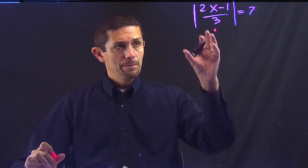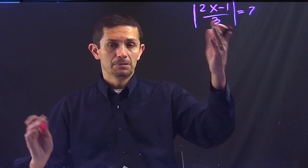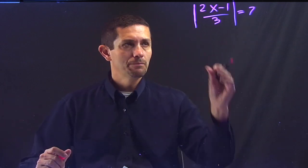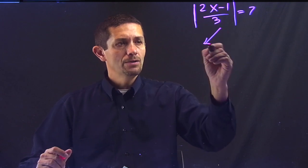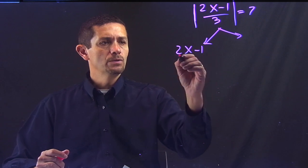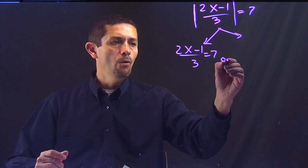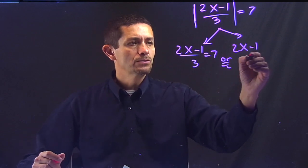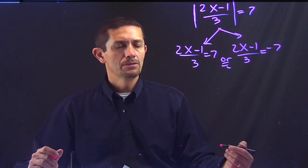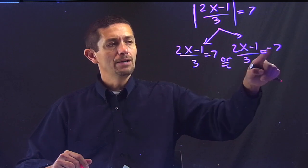Remember, the idea is to have the absolute value by itself on one side of the equation. In this case, it's by itself, nothing is adding or subtracting or multiplying, so by itself. So here I just can go straight to solve. So I'm going to have 2x minus 1 over 3 equals 7 or 2x minus 1 over 3 equals negative 7. So the idea with every single absolute value equation is I'm going to have a positive answer and negative answer.